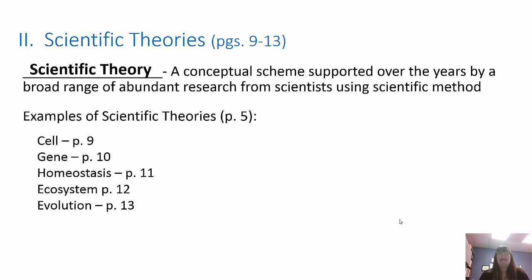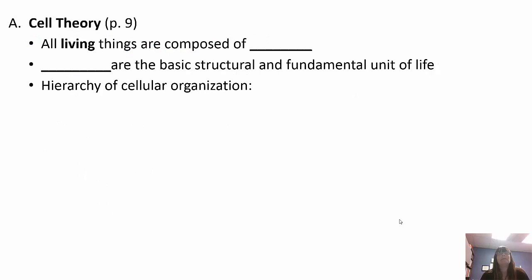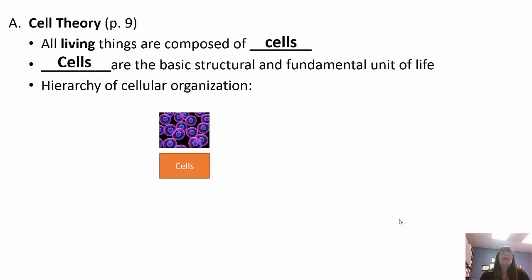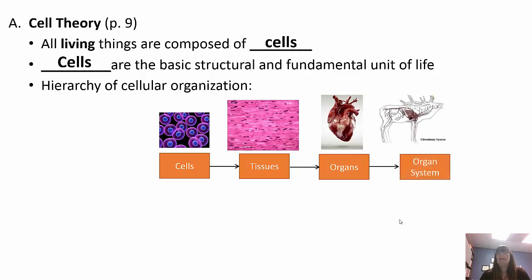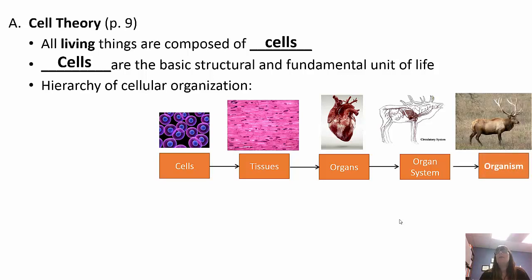We have the cell theory, the gene theory, homeostasis theory, the ecosystem theory, and of course the theory of evolution. The cell theory states that all living things are composed of cells and that cells are the basic structural and fundamental unit of life. We have a hierarchy of cellular organization where cells combine to form tissues, tissues combine to form organs, and organs combine to form organ systems, which combine to form the organism.